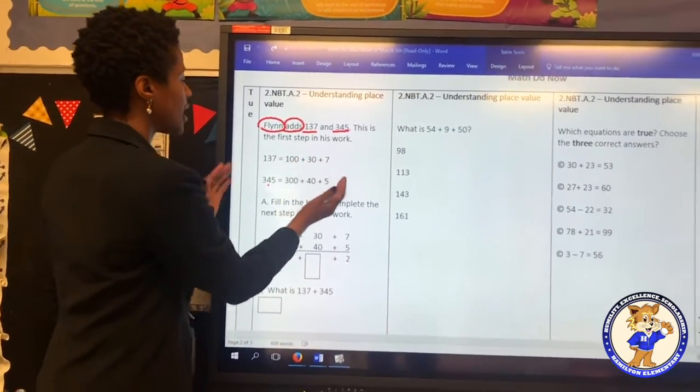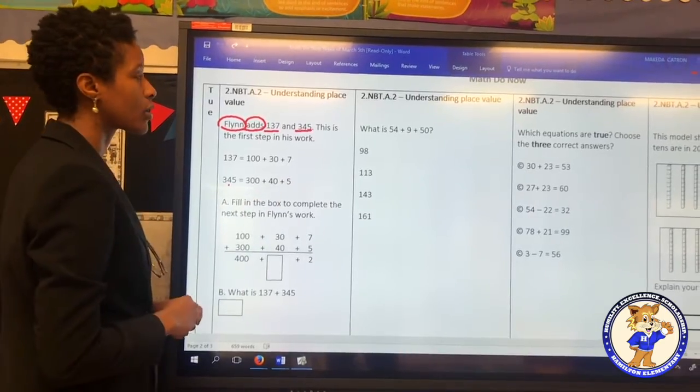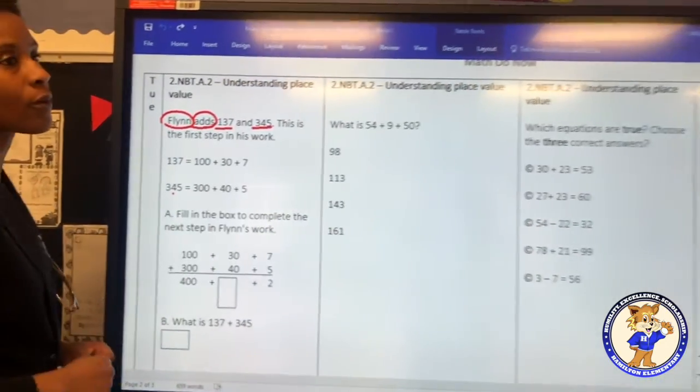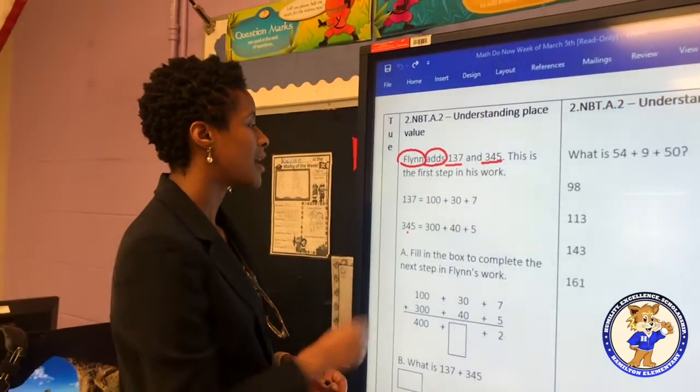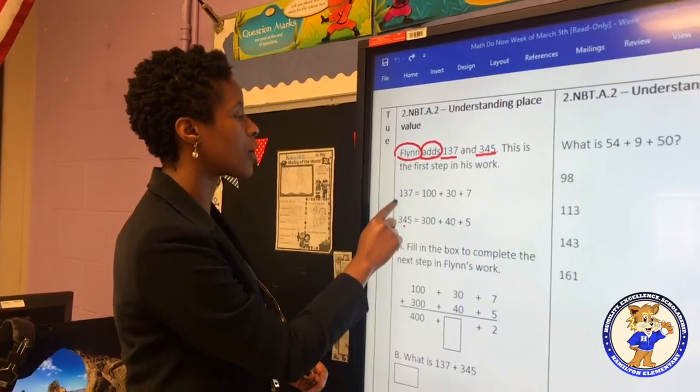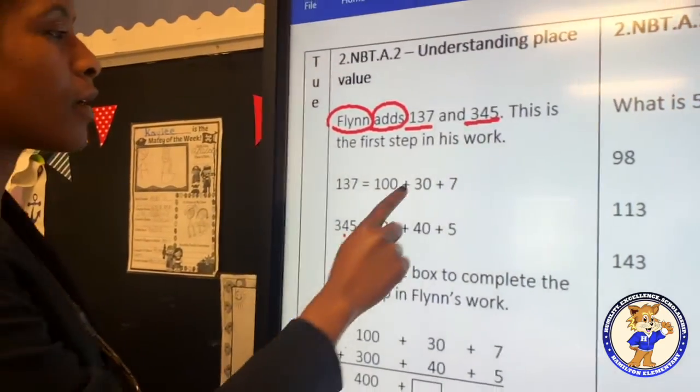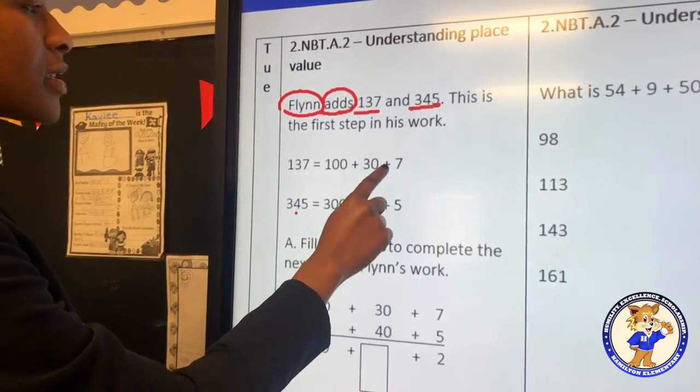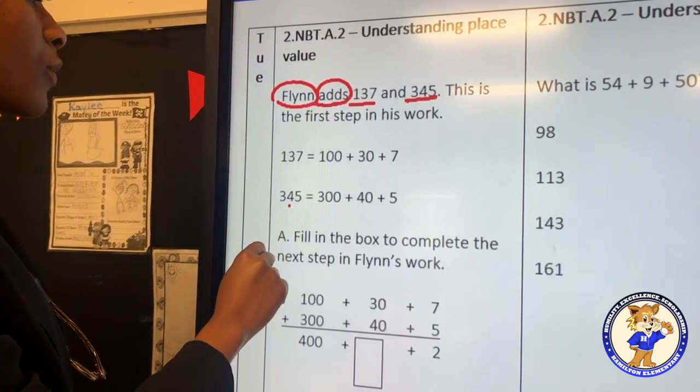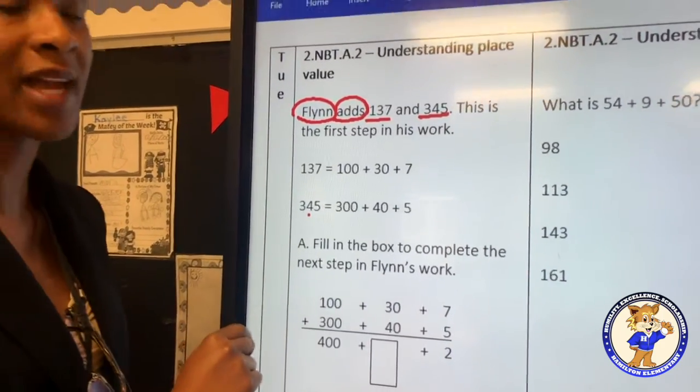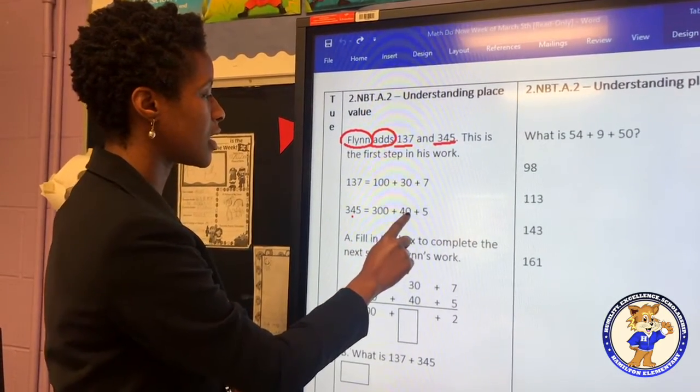So this is the work that he has done. Flynn has basically annotated his work by using the expanded form of solving place values. And so in his annotation, his notes are 137 can be broken down to 100, 3 tens, and 7 ones. Here, the same thing. Flynn understands that 345 is broken down in expanded form to 3 hundreds, 4 tens, and 5 ones.